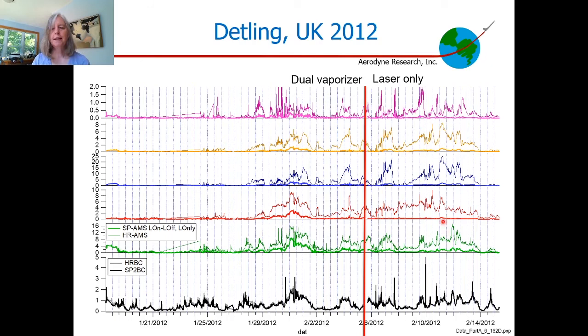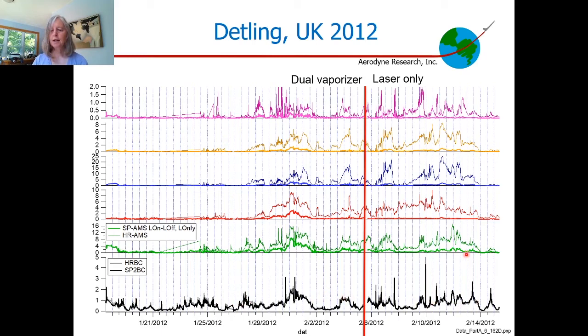How does this apply to ambient measurements? This is data from the UK campaign in 2012. For the first three weeks, we ran in dual vaporizer mode. The thick line is laser-on minus laser-off, and the thin line is a co-located AMS. On the right-hand side of the red line, we removed the tungsten vaporizer and used only the laser vaporizer, measuring only particles containing black carbon and their associated coatings. You can see that the dual vaporizer laser-on minus laser-off is actually quite a bit higher than the laser-only measurements.